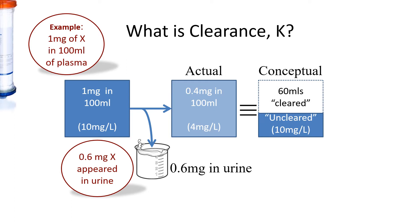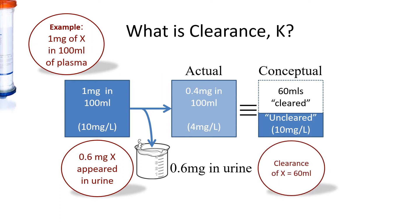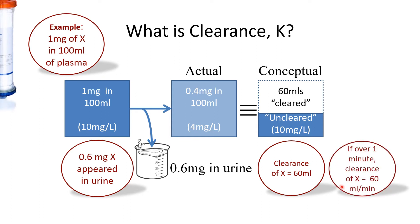But in the clearance concept, we would say that 60 mLs of the blood is completely cleared of substance X, while 40 mLs is uncleared, remaining at the same concentration. And this is a hypothetical volume. So in this case, the clearance of substance X would be 60 mLs, and if this occurred over 1 minute, then the clearance would be 60 mLs per minute.